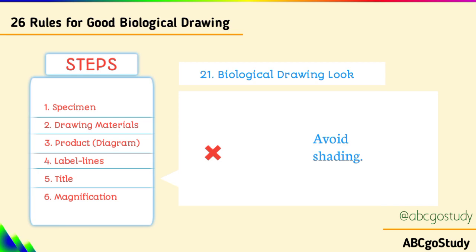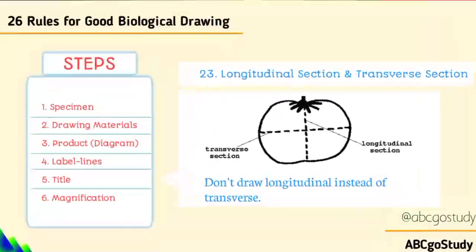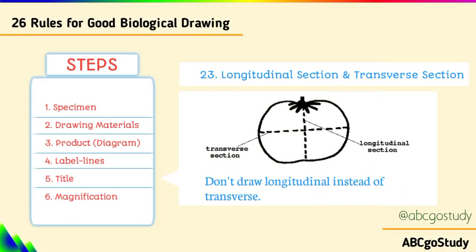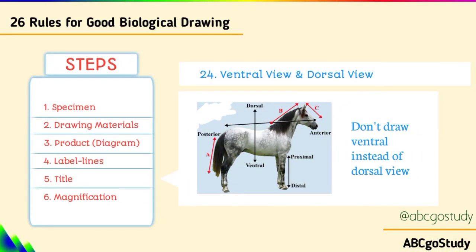They just need it to be plain and clear so they can see the specimen very well. Number twenty-two, biological drawing title: give your drawing the appropriate title as stipulated by the question. The question will tell you what to label — for example, 'Transverse Section of a Tomato' or the dorsal view side. Adhere to the instructions.